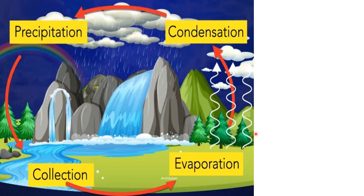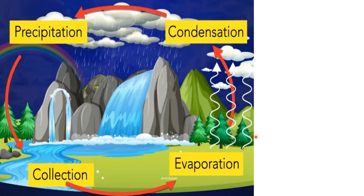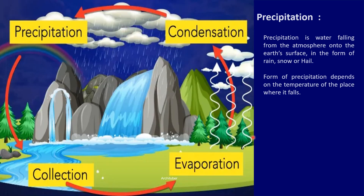Discussing about precipitation — precipitation is water falling from the atmosphere onto the earth's surface in the form of rain, snow and hail. The form of precipitation depends on the temperature of the place where it falls.